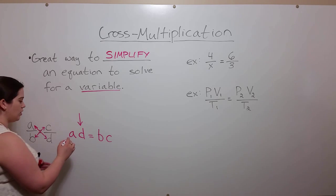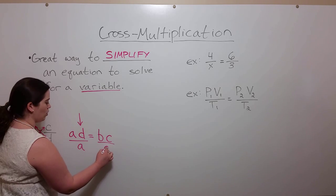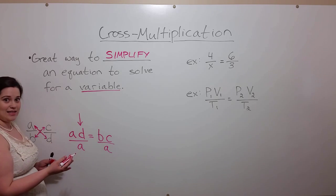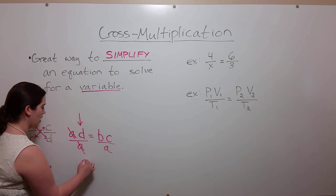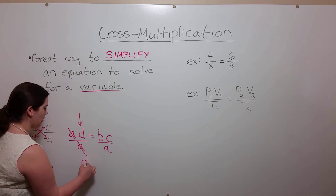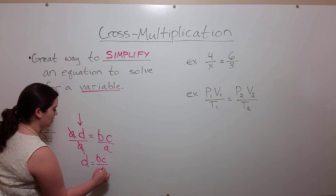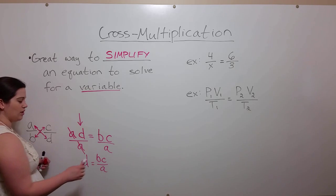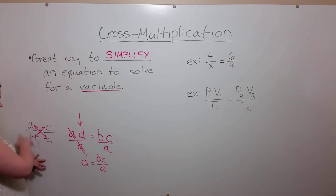Well you simply divide both sides by A in order to isolate D on one side of the equation. These A's cancel and you get D equals B times C divided by A, and then you can just plug these numbers in to solve for D. It's much easier than trying to work out this equation without cross multiplication.